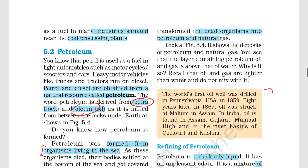Here is an important piece of information: the world's first oil well was drilled in Pennsylvania, USA in 1859. After 8 years, in 1867, oil was found in Assam, India. In India, oil is found in Assam, Gujarat, Mumbai High, and the river basins of the Godavari and Krishna.